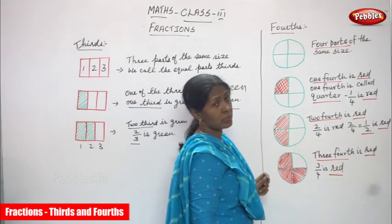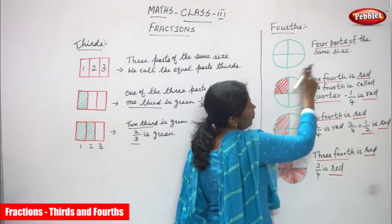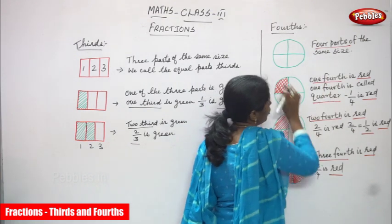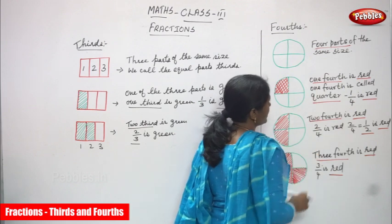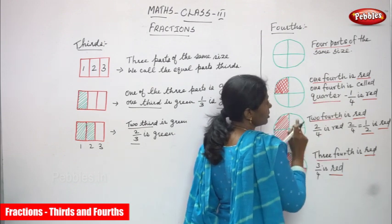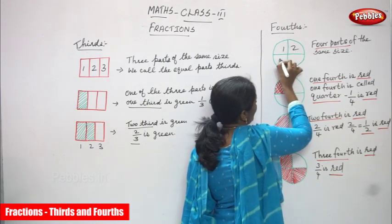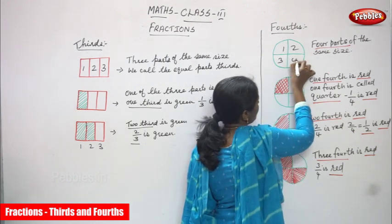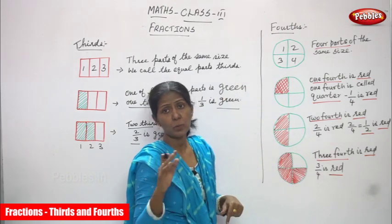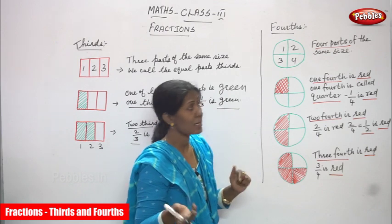Now fourths. Look at this diagram — it's a circle. I cut it into four equal parts, four parts of the same size. One fourth is red. One fourth is called a quarter. One fourth means: altogether first part, second part, third part, and fourth part — the diagram is cut into four equal parts.